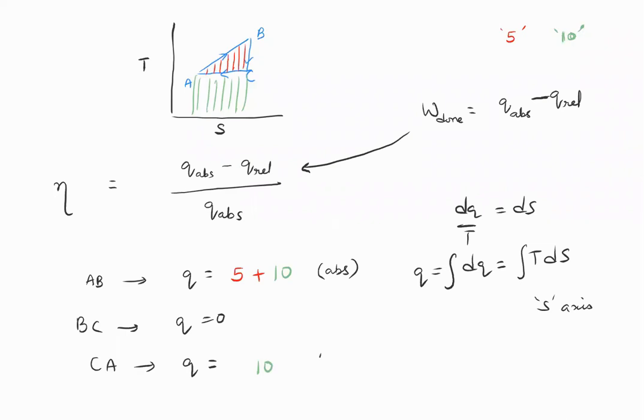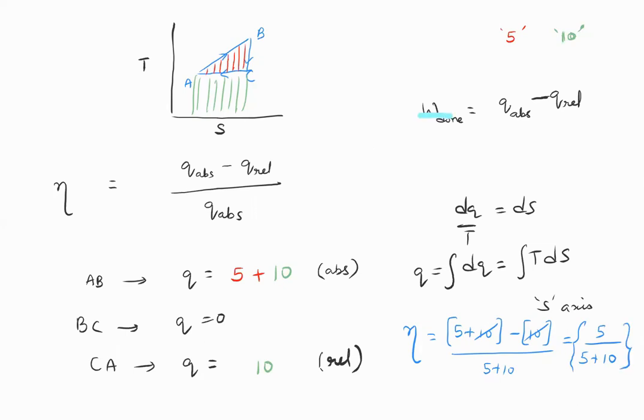So now when I ask you what is the efficiency, I'll use blue color. What is the efficiency? It will be Q absorbed, which is 5 plus 10, minus Q released, which is 10, divided by the Q absorbed, which is again 5 plus 10. So this value becomes 10, you will be left with 5 by 5 plus 10. Now there's a reason why I'm leaving it like this: I want to write my general formula.